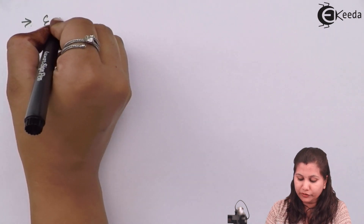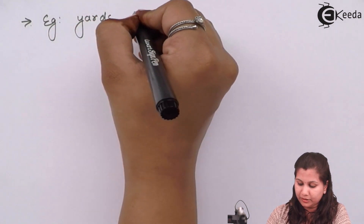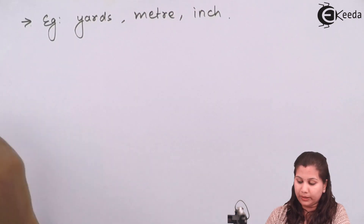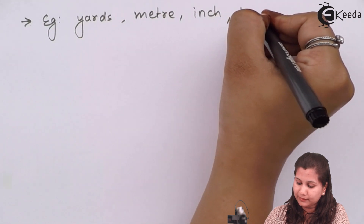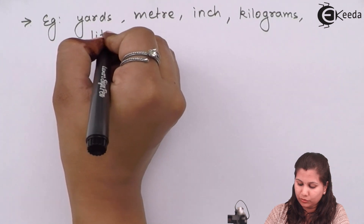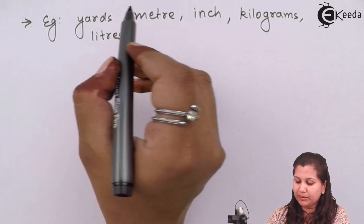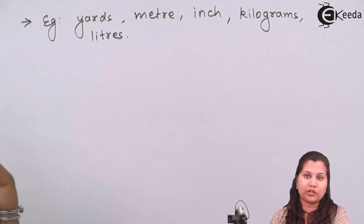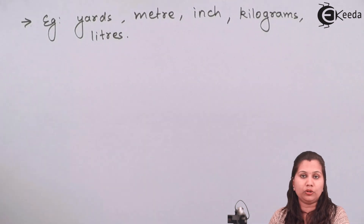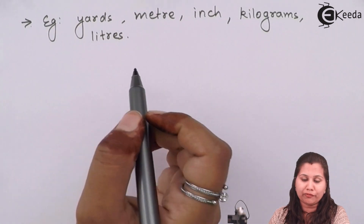Examples of units of measurement include yards, meter, inch, kilograms, and liters — all are units of measurement. Yards, meter, and inch are used to measure length; kilograms are used to measure weight; and liters are also used to measure the volume of a liquid. So these are all units of measurement.